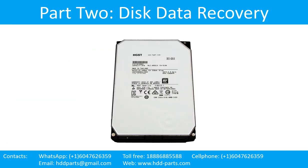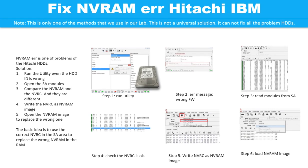Part 2: Disk Data Recovery. Toshiba hard drive busy error — hard drives remain in a busy state without showing drive ID and capacity. This is a very common error in Toshiba hard drives. One possible reason is bad GDIST or SMART data.